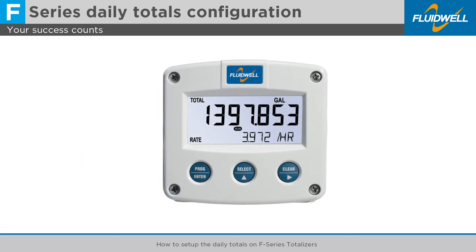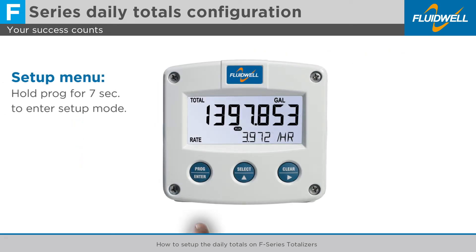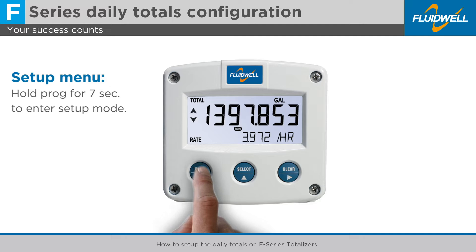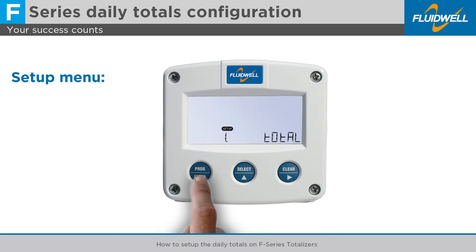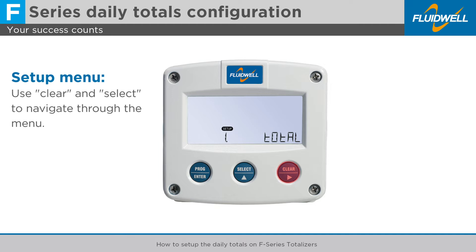Let's take a look at how this works. Hold the program button for 7 seconds to enter the setup mode. Menu 1, total appears. You can use the clear and select buttons to navigate through the menu.